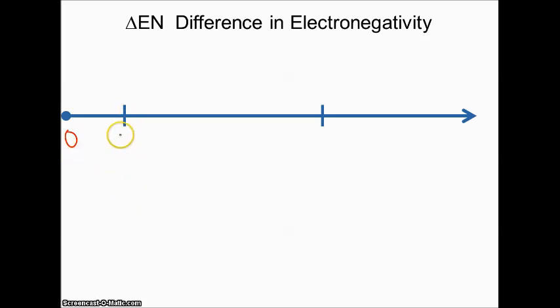The first hash mark here, different people argue about where it should be. Some people call it 0.3, some people call it 0.5. If you calculate the difference and it's somewhere around 0.3 or 0.5, that's the first cutoff mark. If your difference is in between here, we would call that a nonpolar covalent bond. Nonpolar means there are not separate poles. It's going to be very evenly shared electrons. They are both pulling equally on those electrons.